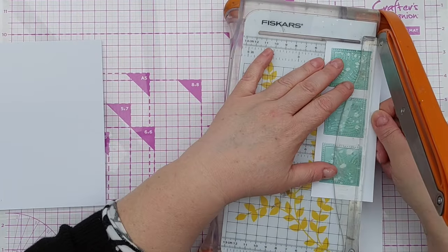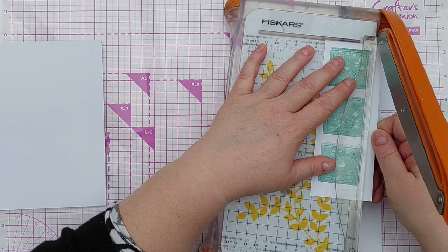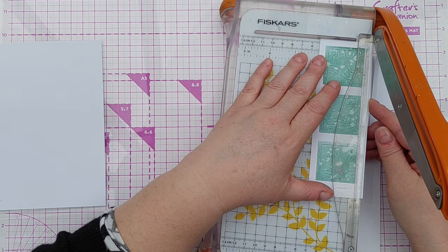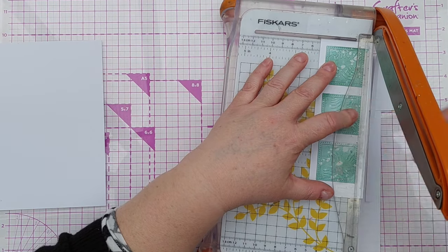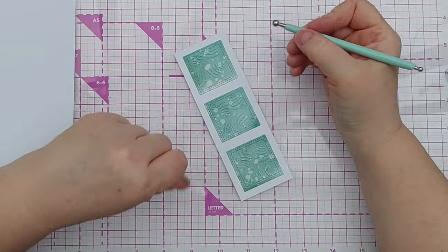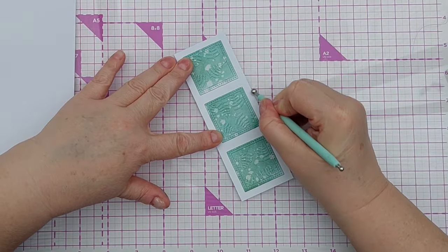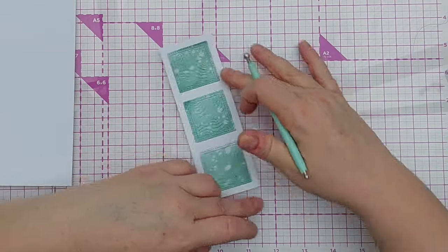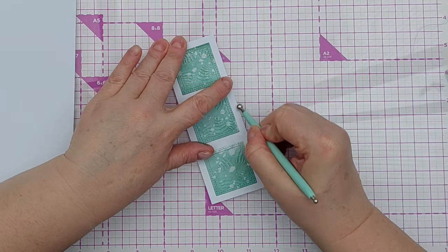Once that was done I used my guillotine to trim down my cardstock into a long thin panel, and to make my panel look as if it had been die cut I ran an embossing tool around the outside to give it beveled edges. I think this makes it look a little bit more polished, a little bit more finished.